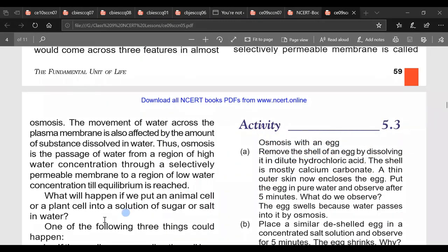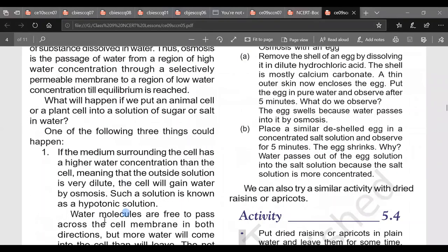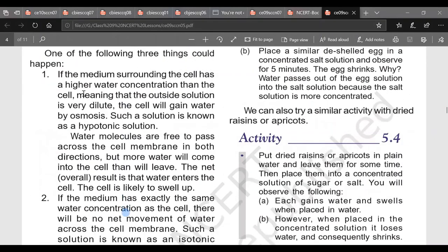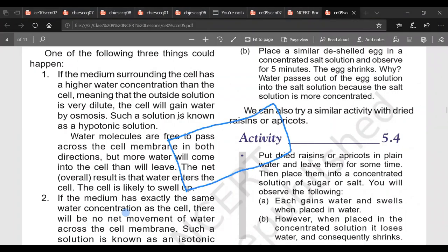All of you have observed osmosis in your day-to-day life. Now first case is if medium surrounding cell has a higher water concentration than the cell, meaning outside solution is very diluted, cell will gain water by osmosis. This type of solution is known as hypotonic. Now what does it mean? Say this is a cell and outside we have kept, say it is water. And the cell is basically, suppose we can say raisins or kishmish.